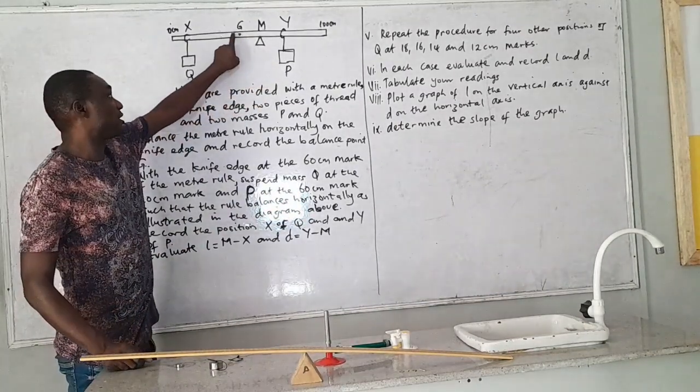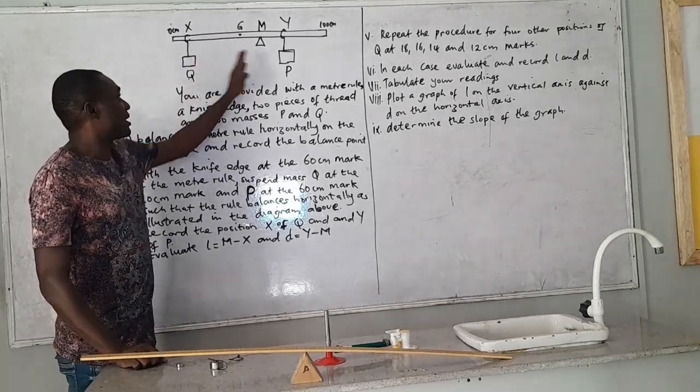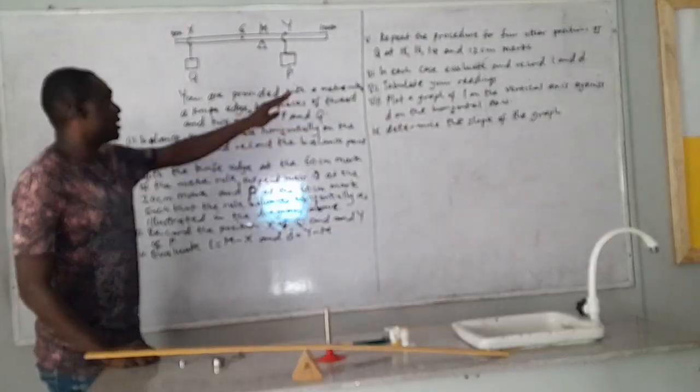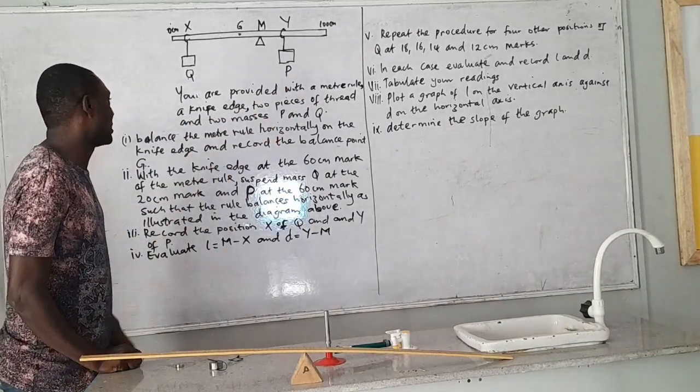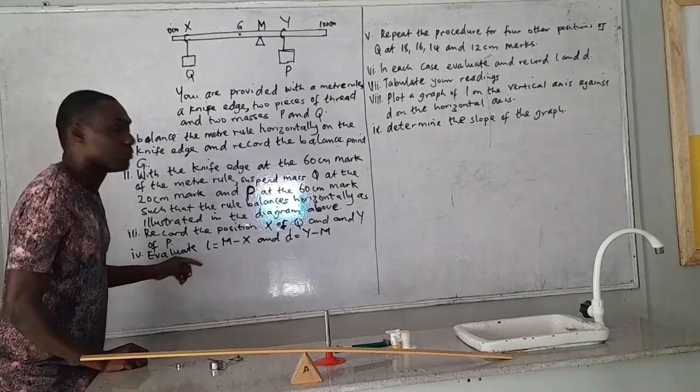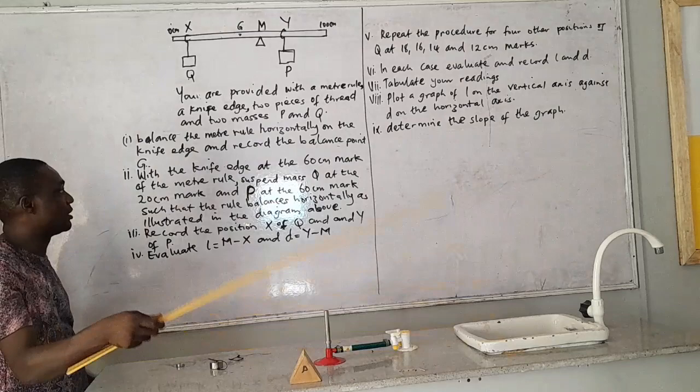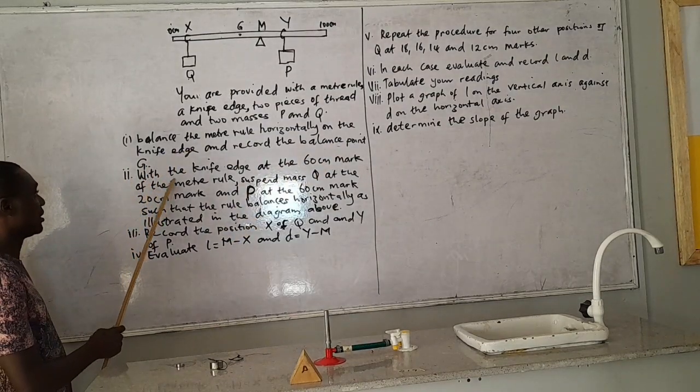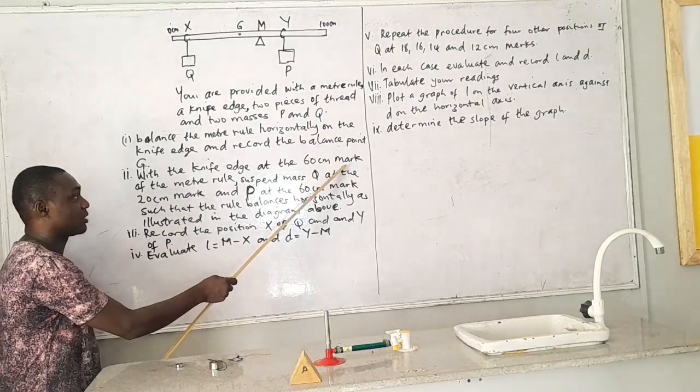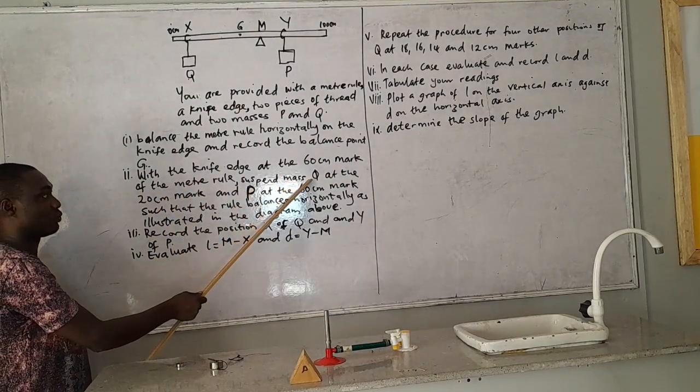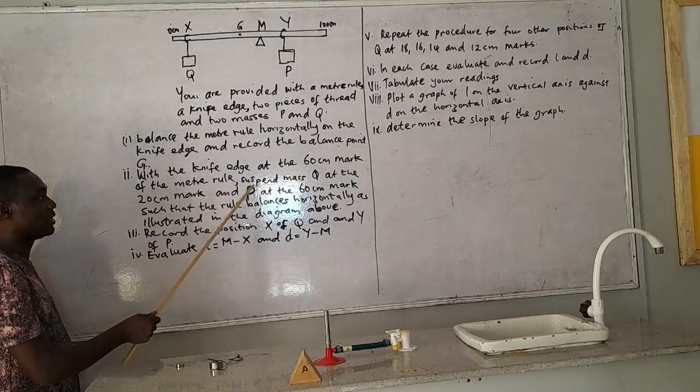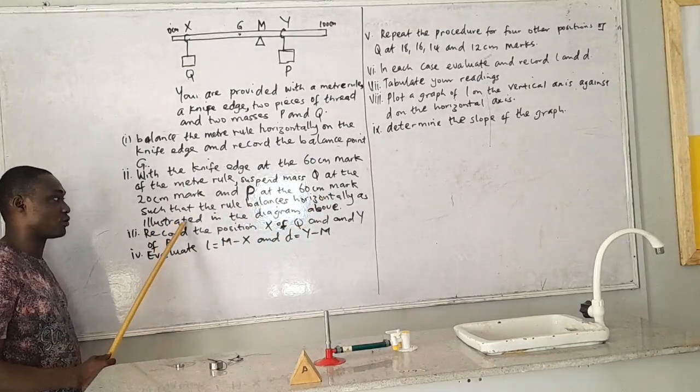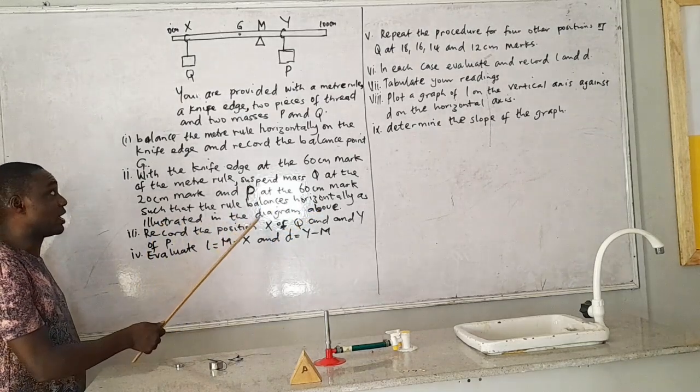So you have the setup. This is a meter rule and you have a knife edge. Then you have masses and you have positions on it. You are provided with a meter rule, a knife edge, two pieces of thread and two masses P and Q. Balance the meter rule horizontally on the knife edge and record the balance point G. With the knife edge at the 60 cm mark of the meter rule, suspend mass Q at the 20 cm mark and P at the 60 cm mark such that the rule balances horizontally as illustrated in the diagram above.